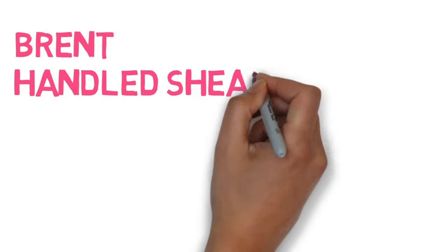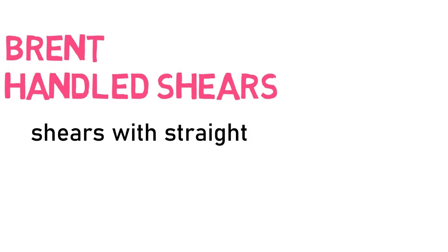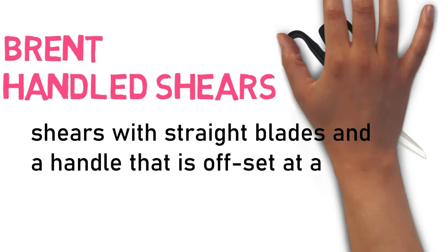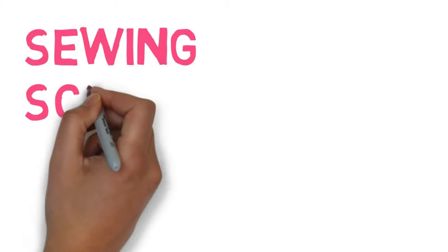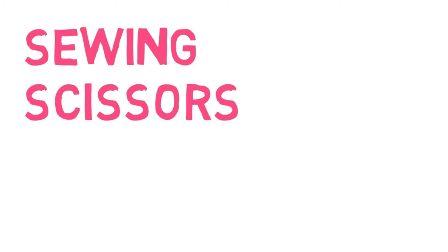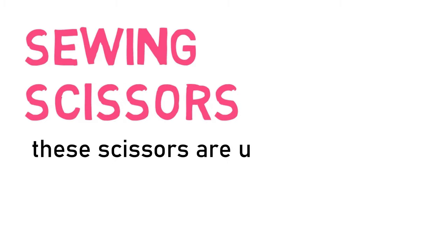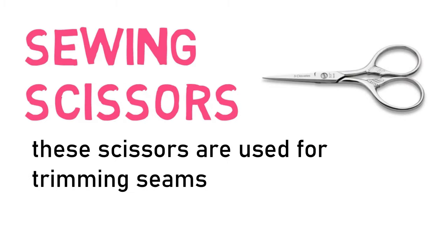Bread-handled shears. Shears with straight blades and a handle that is offset at an angle, allowing the lower blade to stay flat. Sewing scissors. These scissors are used for trimming seams and facings.